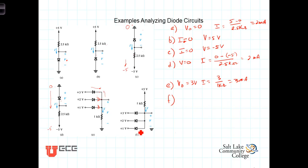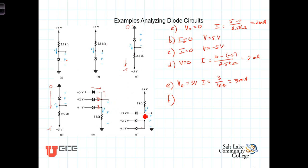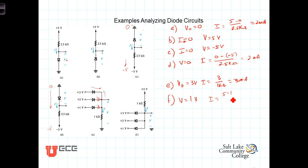Let's check whether the 1-volt diode is conducting with the other two off. If this one's conducting, we have 1 volt at the node. With 1 volt at the node and 2 volts on the adjacent source, the higher voltage is on the wrong side, so that diode is reverse biased — as is the third diode. So the assumption that the 1-volt diode is conducting and the other two are off is correct. The output voltage V equals 1 volt, and the current equals 5 minus 1 divided by 1 kilohm, giving 4 milliamps.